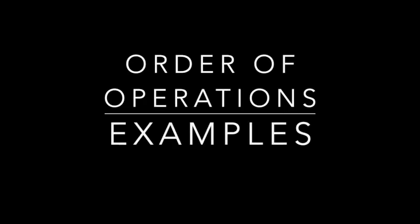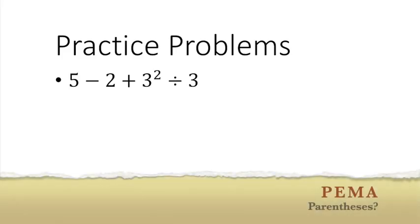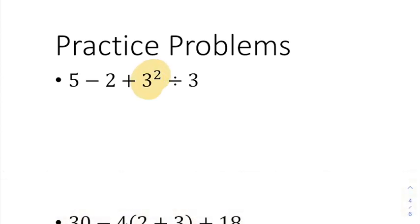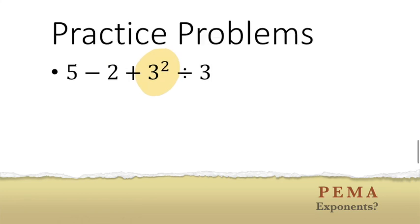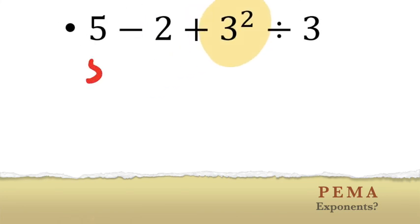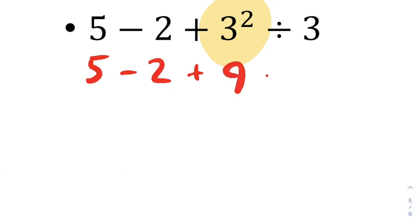All right, so let's go through a couple of examples of how to use the order of operations. In this first problem, we're going to start off by determining what needs to get done first. I don't see any parentheses in this problem, so I need to move on to E, which is exponents. I see a 3 to the second, which can be simplified. So I'm going to do that first. I'm going to rewrite everything else in the problem, but change that 3 to the second power to be a 9.